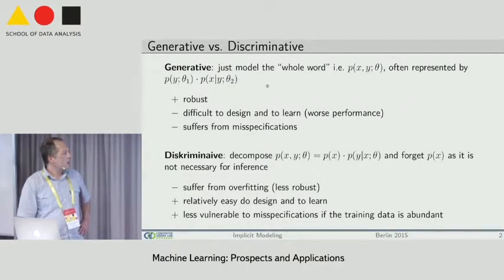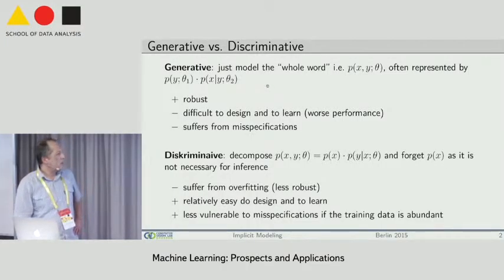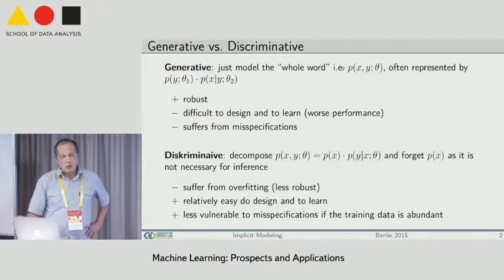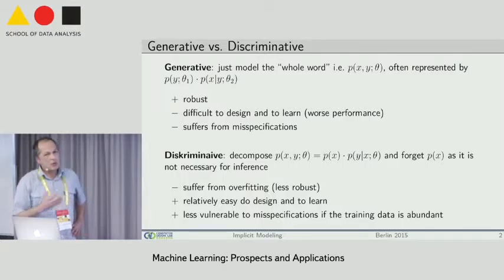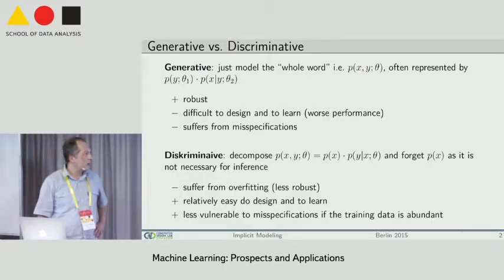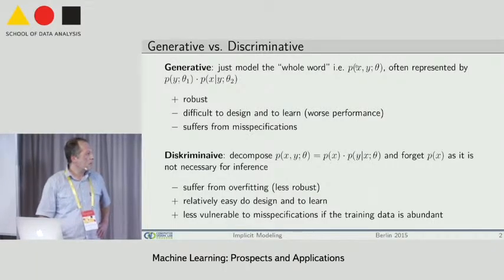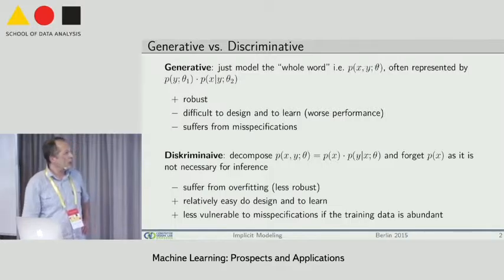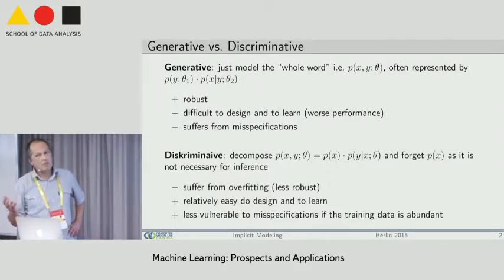Generative statistical models mean basically you have a joint probability distribution. To some extent it means that you model the whole world. For each elementary event of your world, for each pair observation x, some prediction label y and some model parameter, you have just a number.